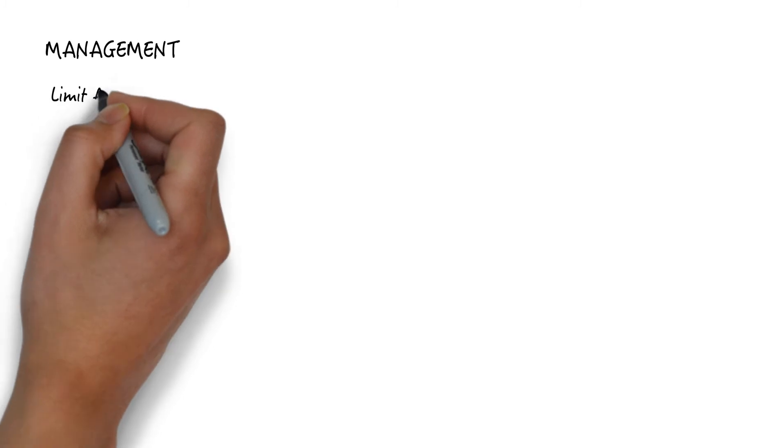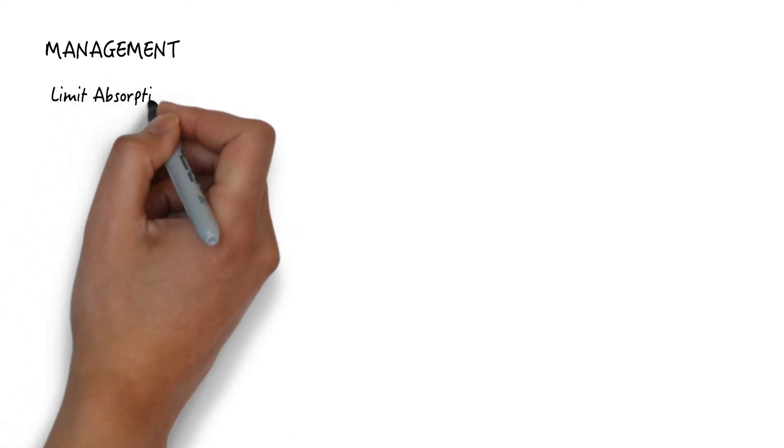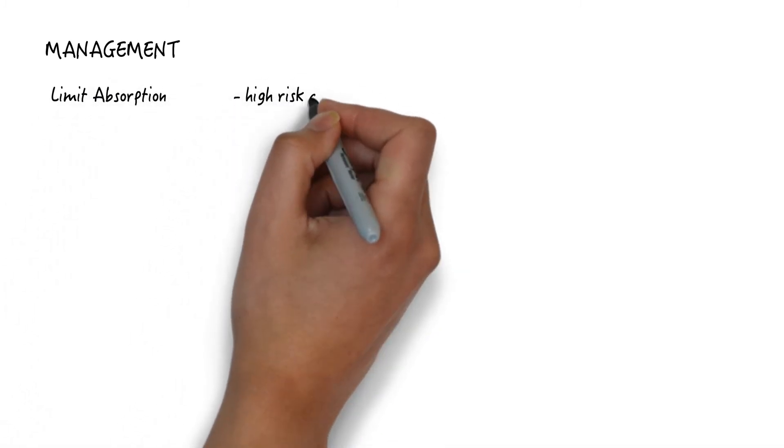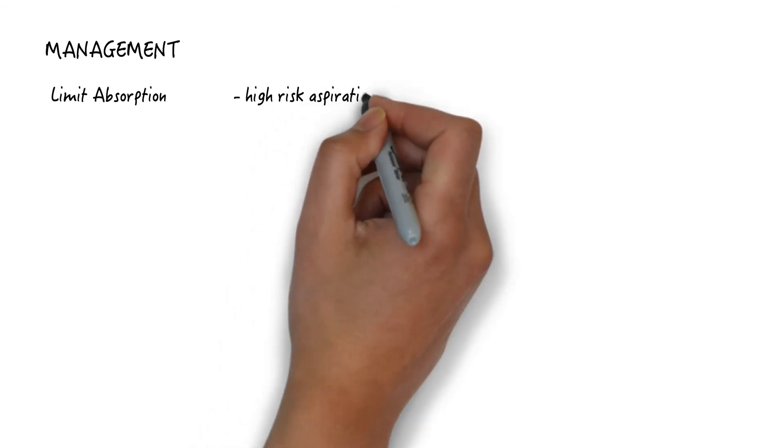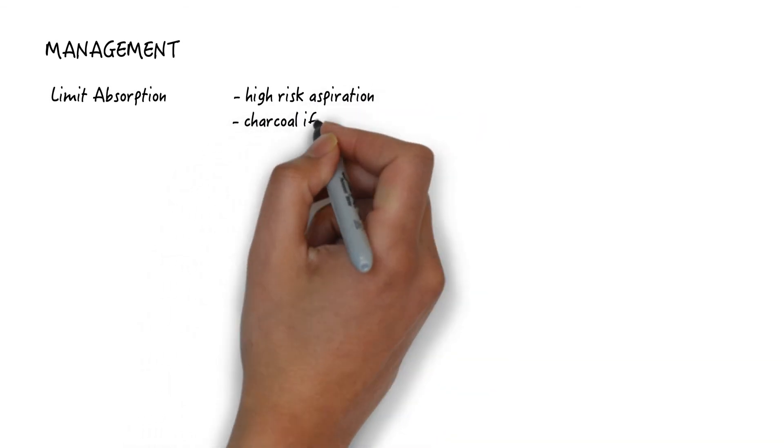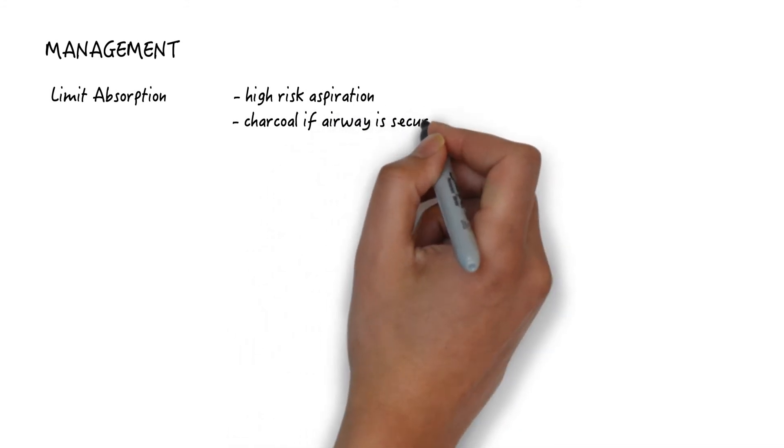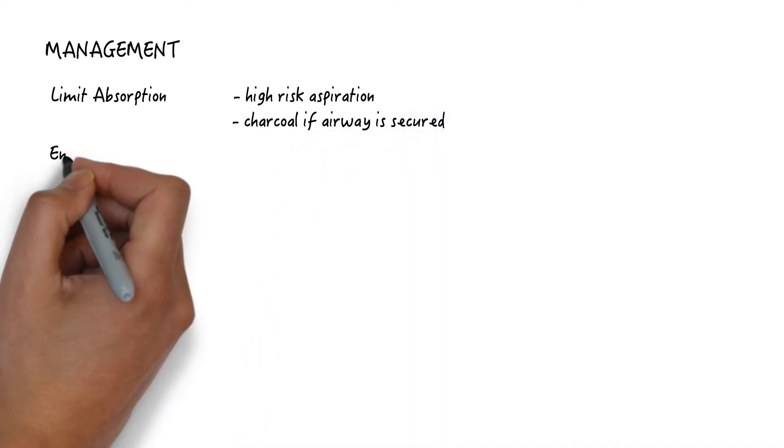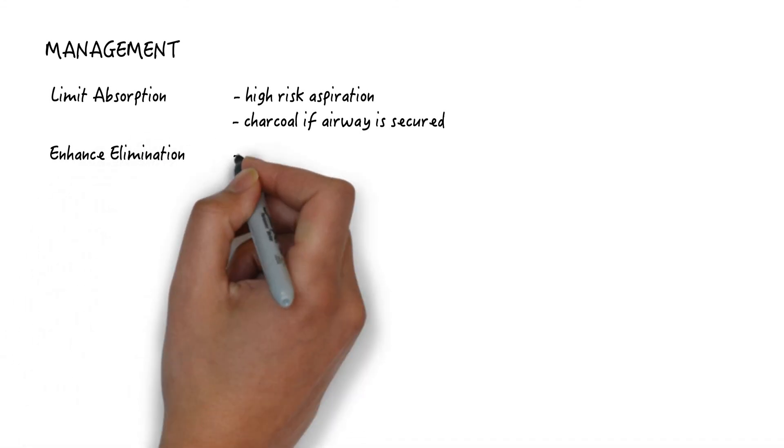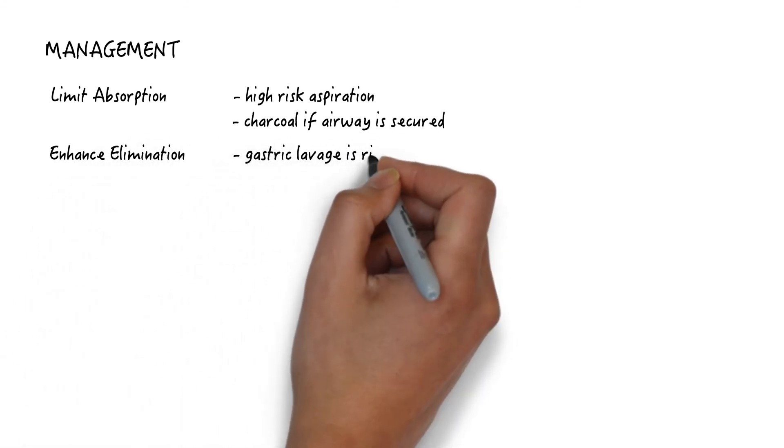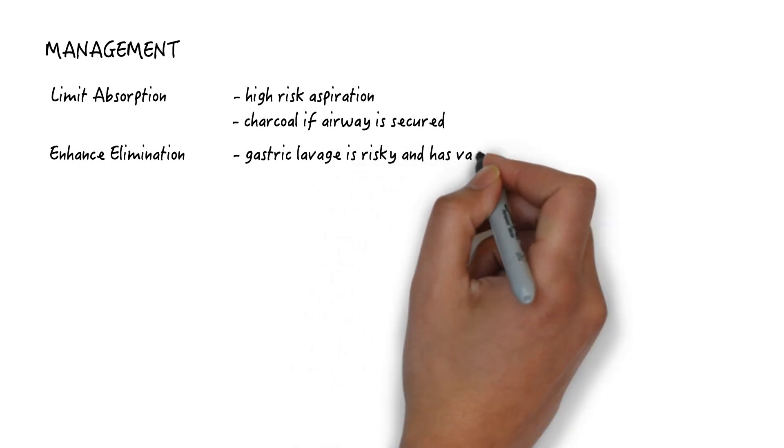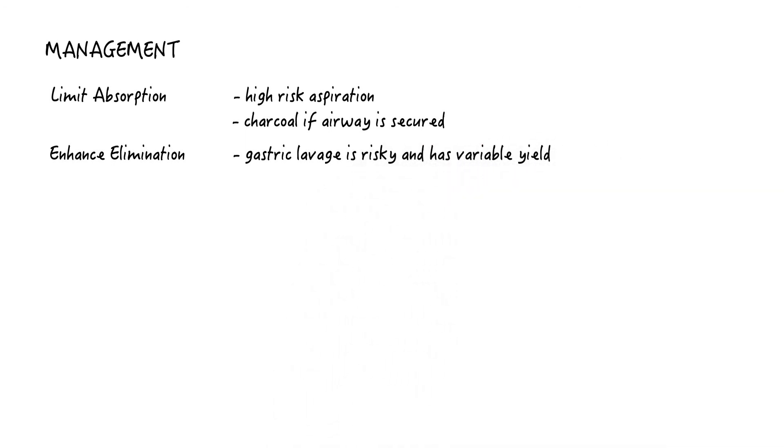How do we manage this? As with all things toxicologic, you try to limit absorption. The problem is that TCAs are rapidly absorbed. These patients are altered and have a high risk of seizures and aspiration. If you have secured the airway, you can give a one-time dose of charcoal. You also try to enhance elimination, but TCAs are not dialyzable and gastric lavage is very risky and has variable yield even if performed within the first hour of ingestion. You definitely need to secure the airway to do this. And by that time, you might find that you have more on your plate to handle than worry about a high-risk procedure with questionable benefit.